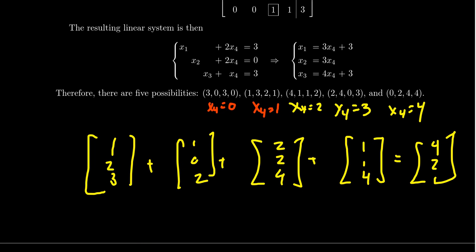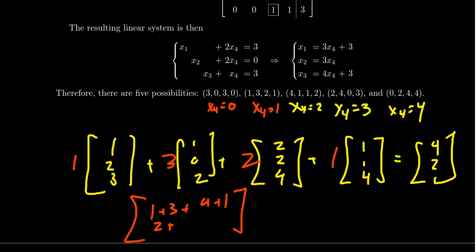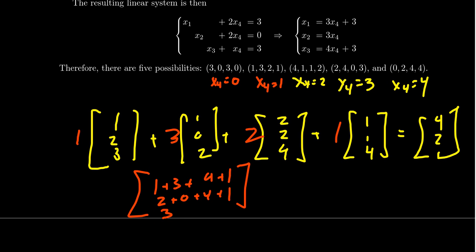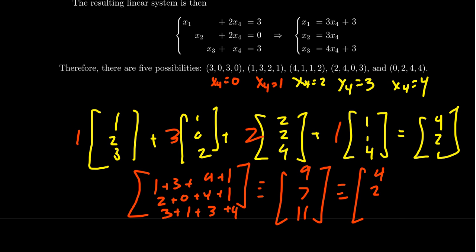Let's try x4=1 with coefficients (1, 3, 2, 1). First entry: 1+3+4+1=9≡4. Second entry: 2+0+4+1=7≡2. Third entry: 3+6≡1+8≡3+4=11≡1. So we get (4, 2, 1) = B again. We can verify that all five linear combinations work.